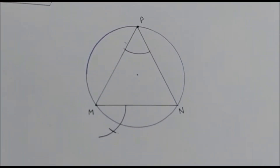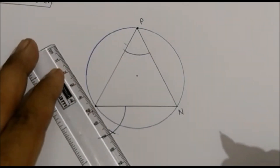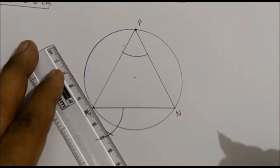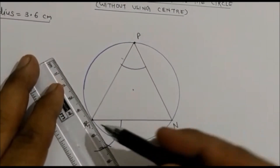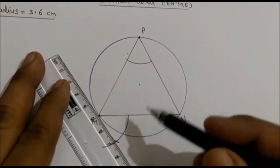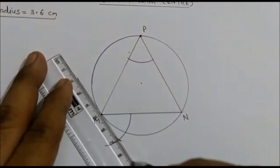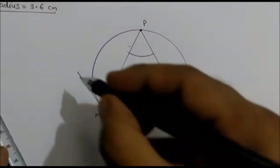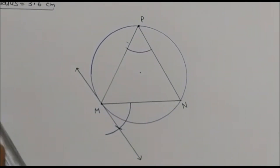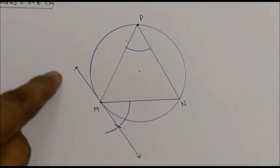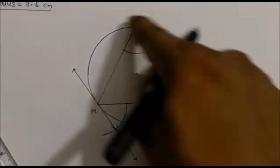And after that, now if you are going to join this — see students — join with this point M, join with this arc. So you can see this line is a tangent, this line is a tangent to the circle.